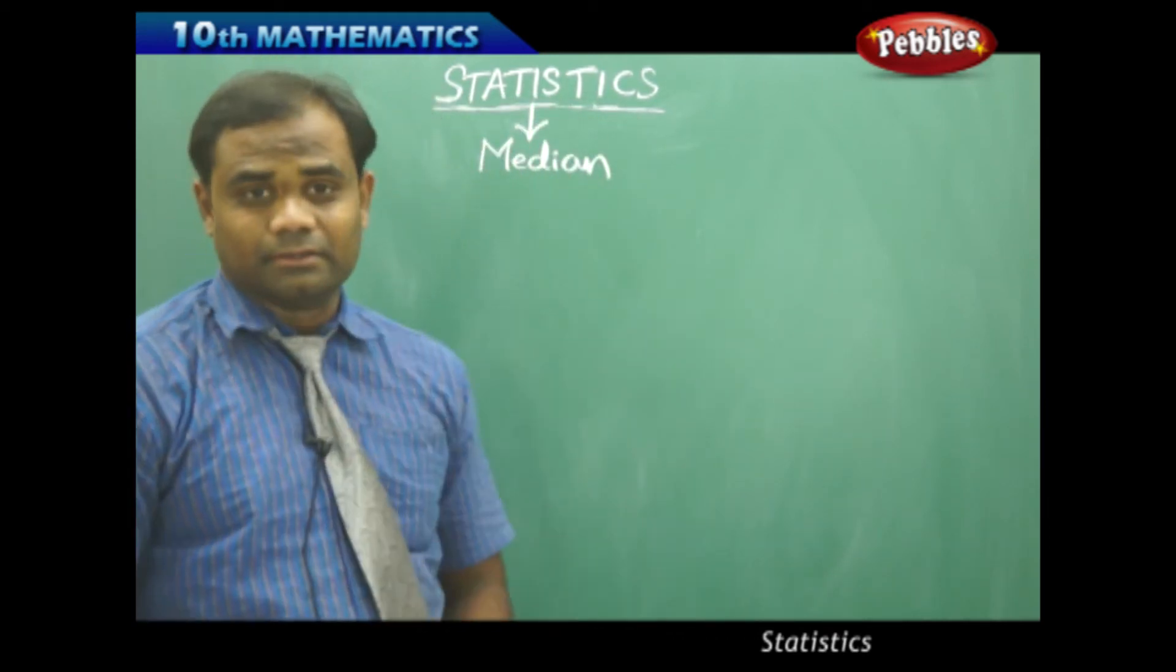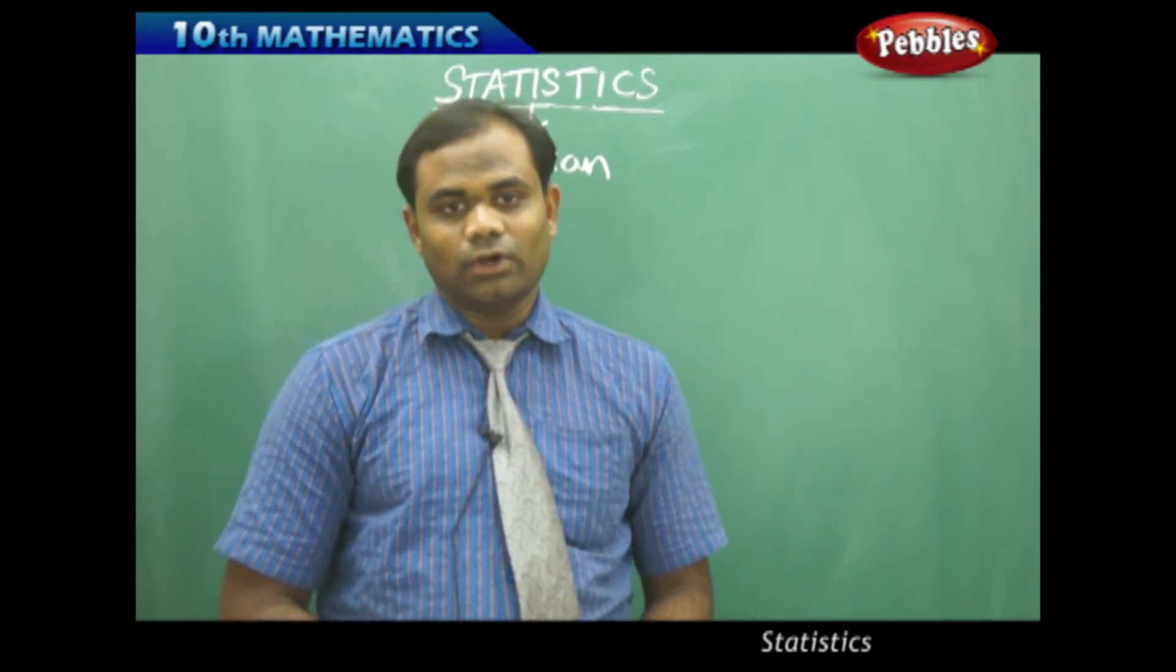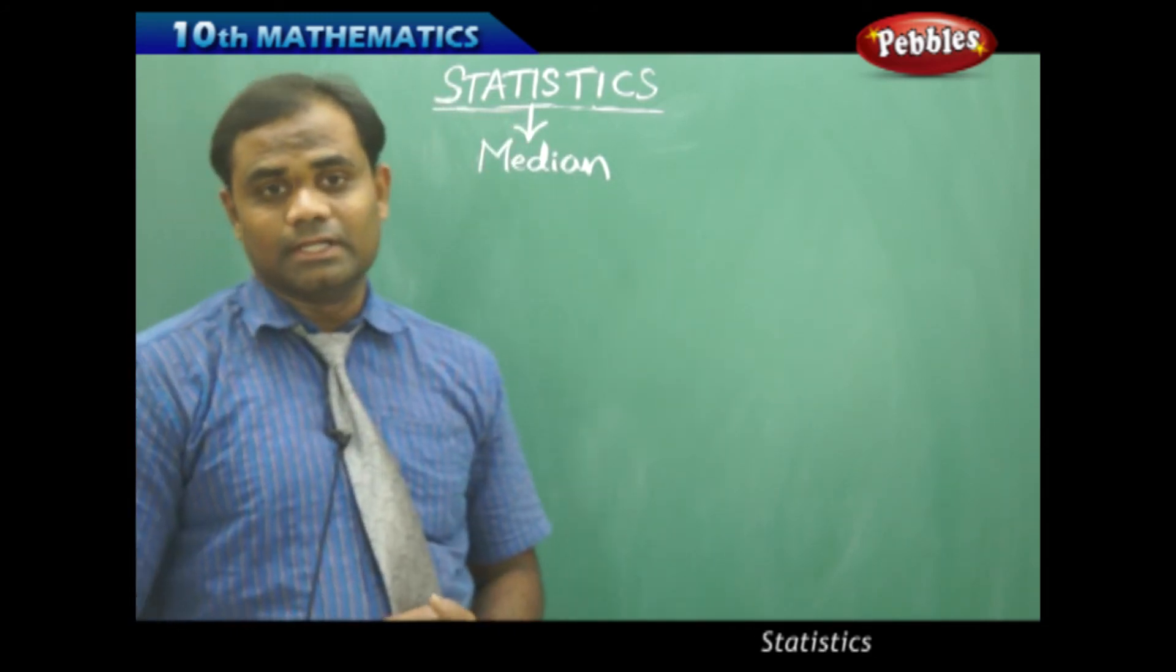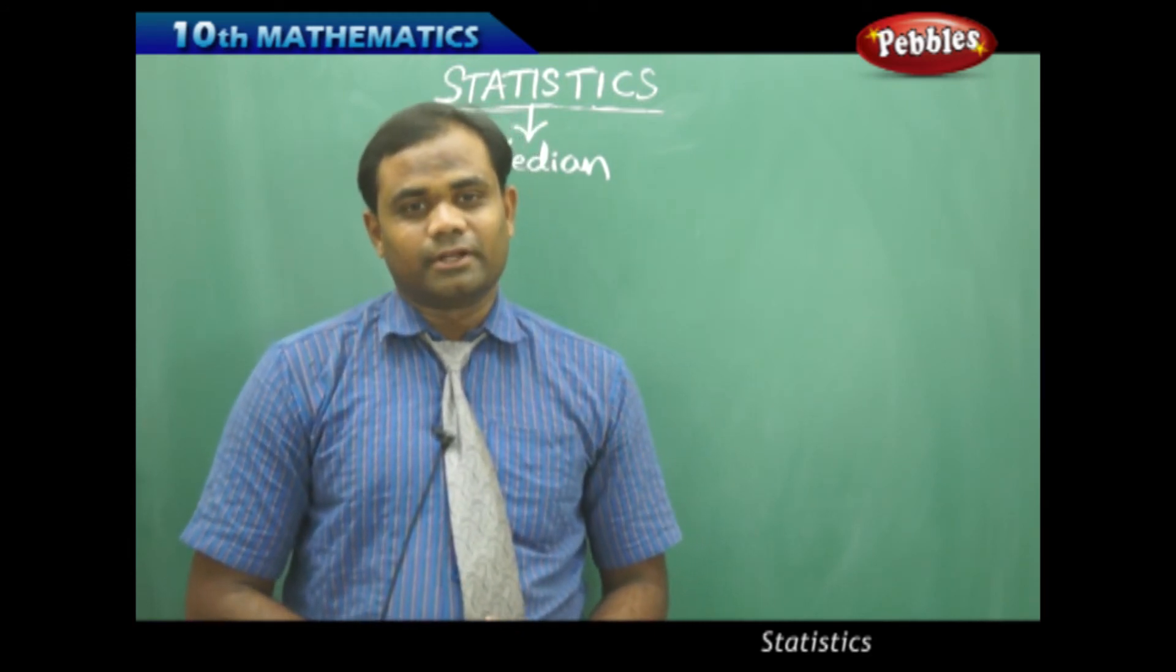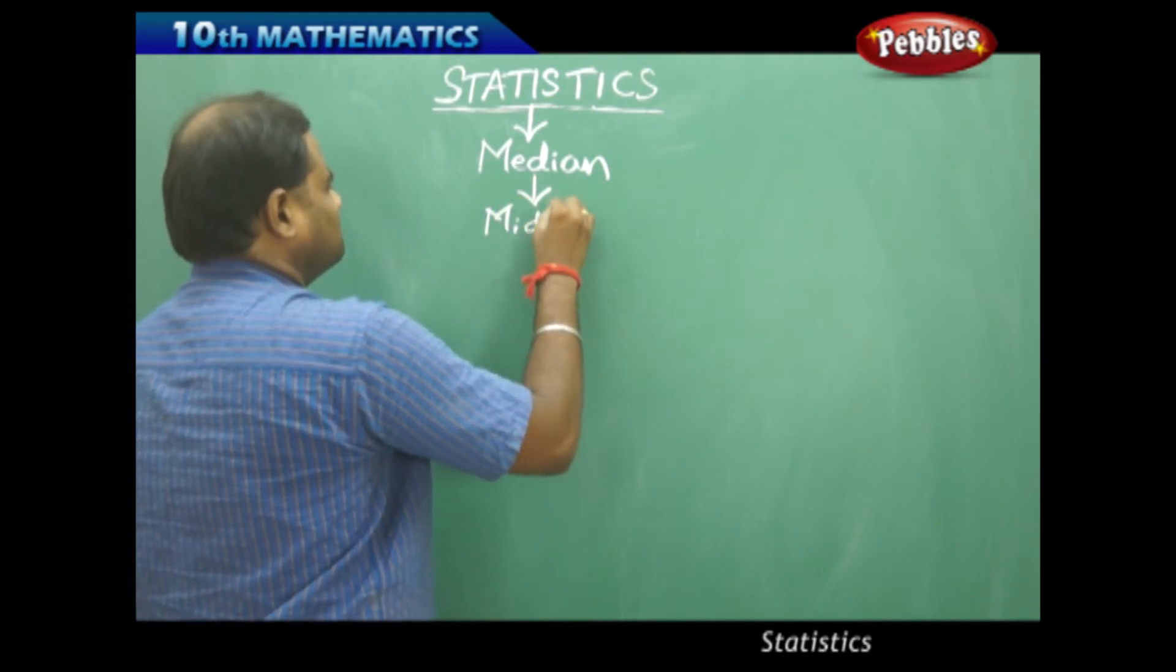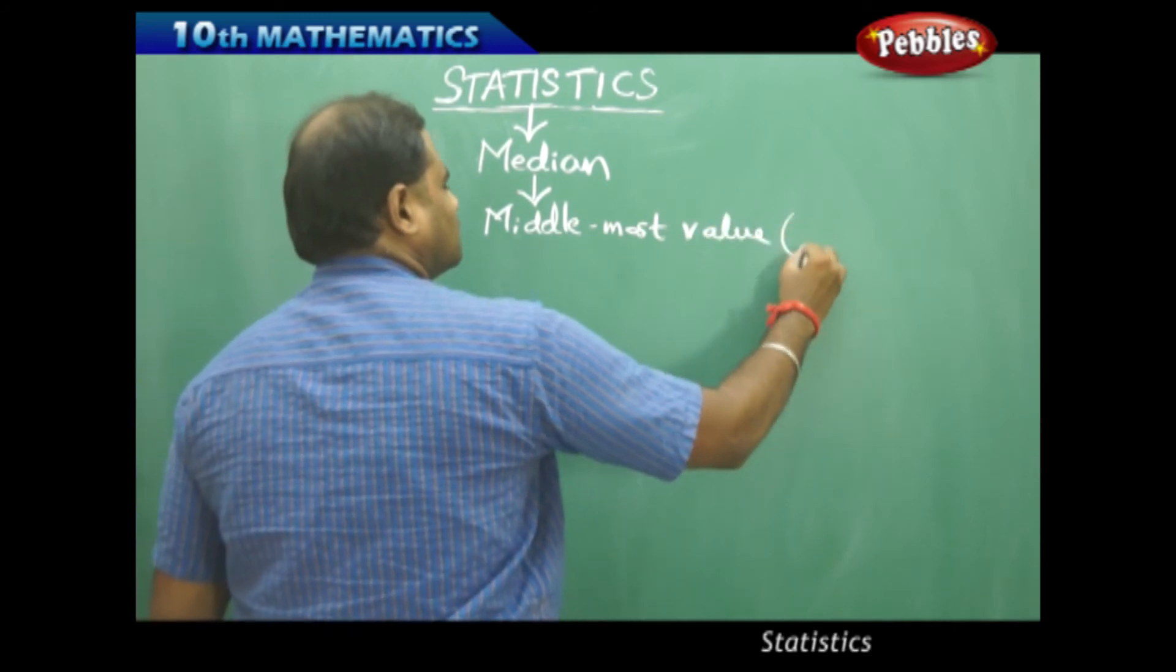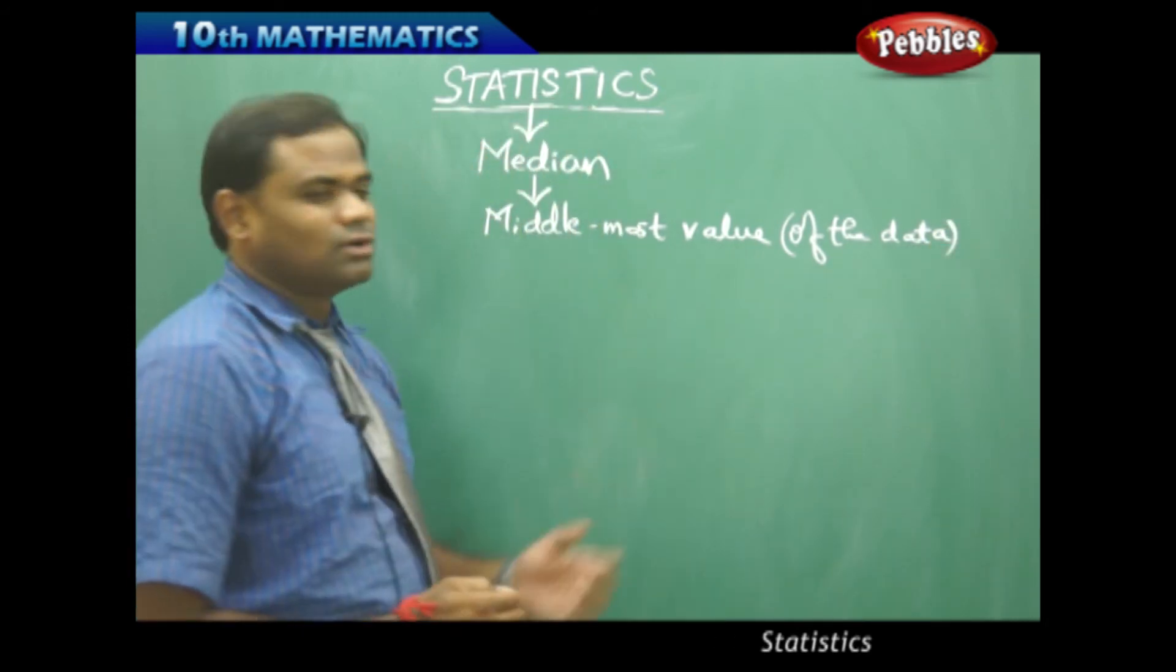Next, the third measure of central tendency is median. So what is median? Median is generally referred to as the middle most value. So when I understand median, I understand this as middle most value of the data or of the observation is called the median.